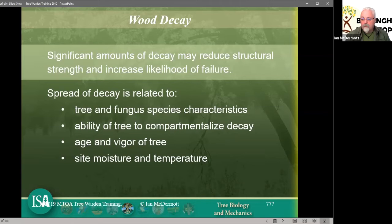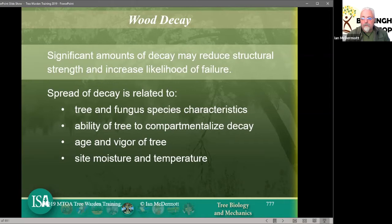So the tree and fungus species characteristics — if a doctor has a patient, they can identify that the patient is most likely human and will have one set of biology to consider. With our diagnosis, we need to know what the specimen is — the fungi, disease, parasite, or virus — and also the species of tree it's occurring on, because the interactions between the problem and the patient are related to both specifically. Some fungi on some trees have no effect; on the next species they're quite devastating.